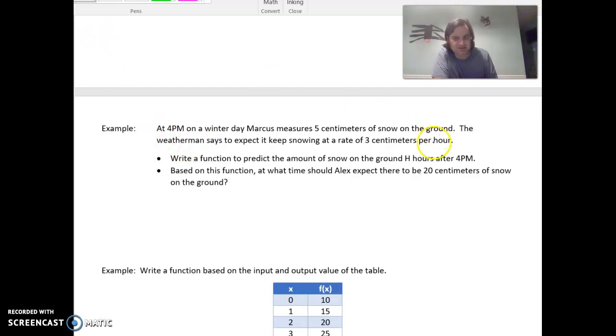So what do we know here? We know that it's going to start, the b being 5 centimeters. And we know that the rate, the m, is going to add 3 per hour. So let's see, what do we want to call this thing? We can call it snow, so we can call it s of h. Snow per hour.